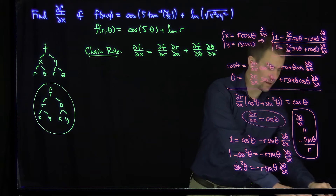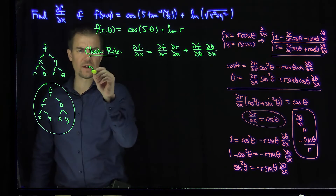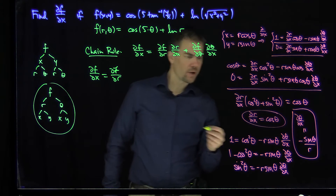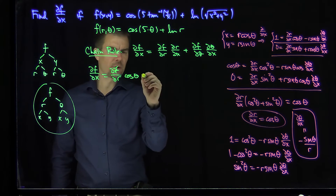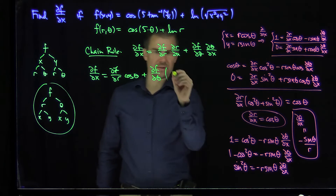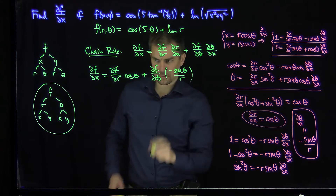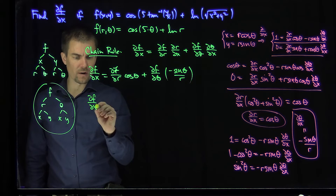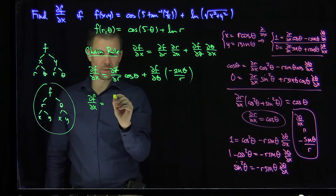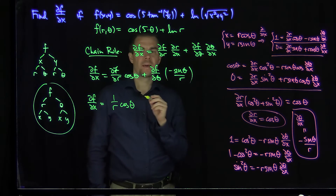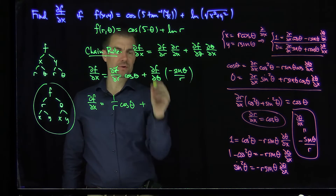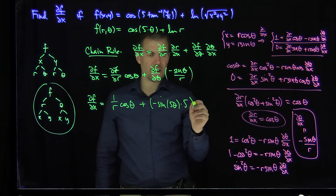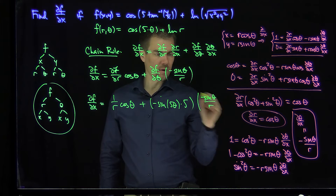Going back to our chain rule, partial f partial x equals partial f partial r times cosine theta, plus partial f partial theta times (negative sine theta over r). For this function in polar coordinates, partial f partial r is 1 over r, and partial f partial theta is negative 5 sine of 5 theta. So substituting, we get (1/r) times cosine theta, plus (negative 5 sine 5 theta) times (negative sine theta over r).